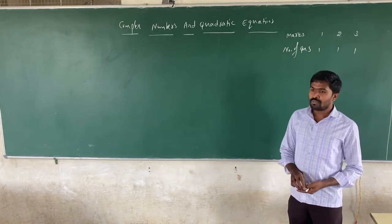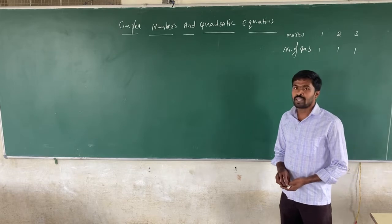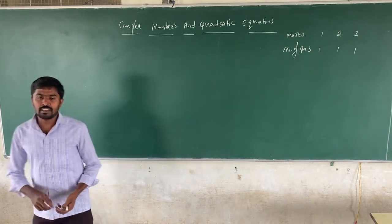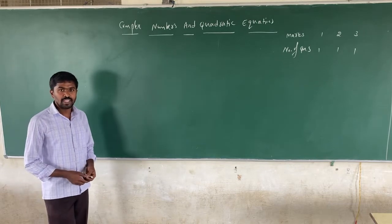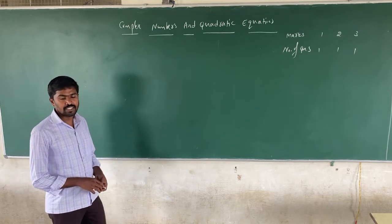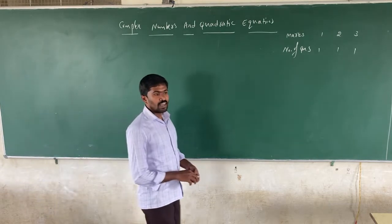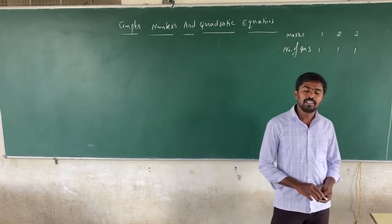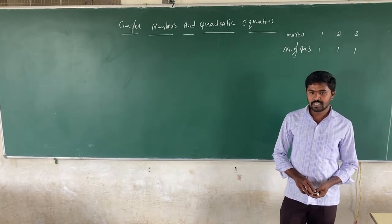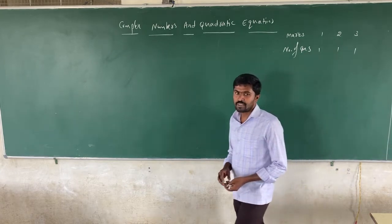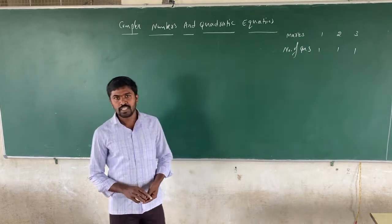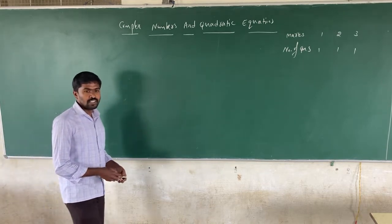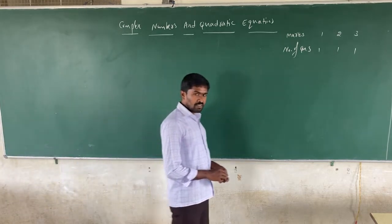In your first year syllabus in Mathematics, there are 16 chapters. The first one is Sets, the second one is Relations and Functions, the third one is Trigonometric Functions, the fourth one is Mathematical Induction, the fifth one is Complex Numbers and Quadratic Equations, and the sixth one is Linear Inequalities.